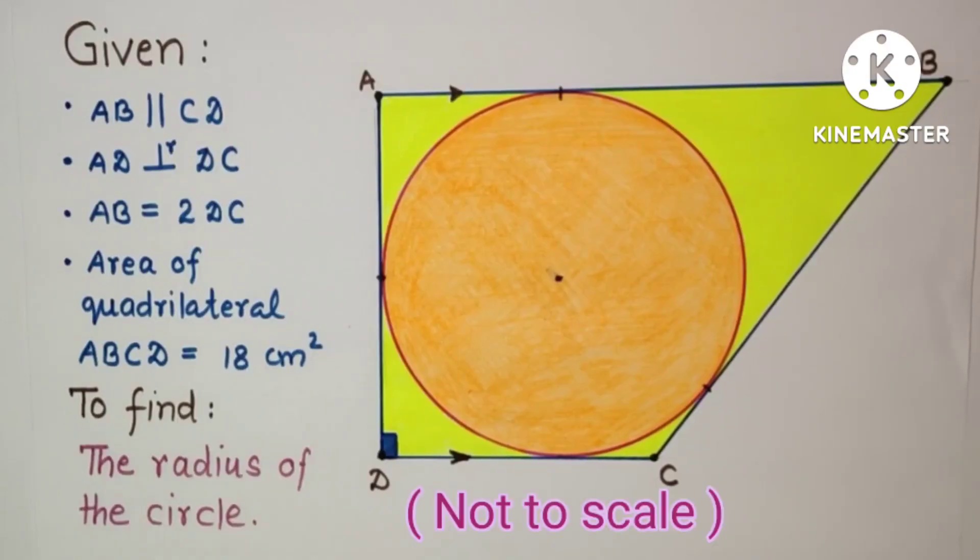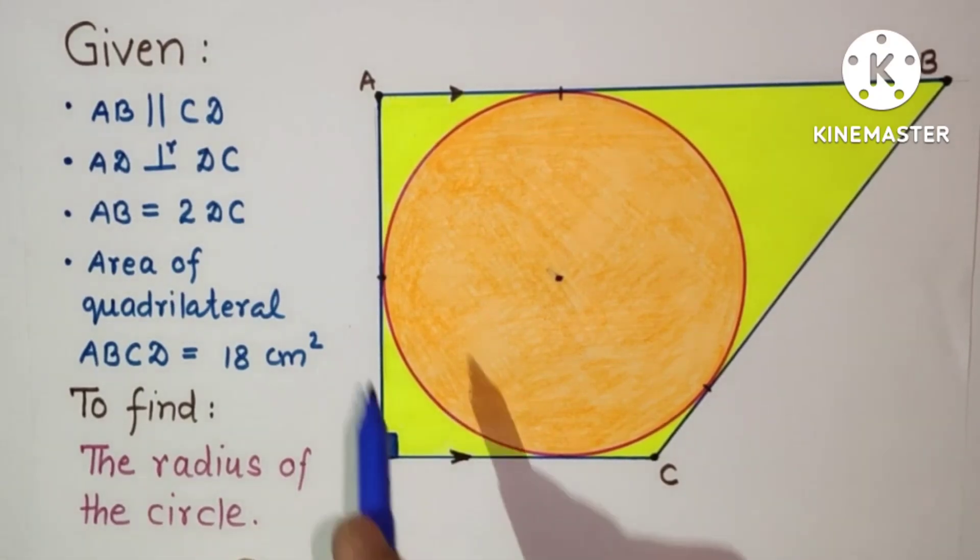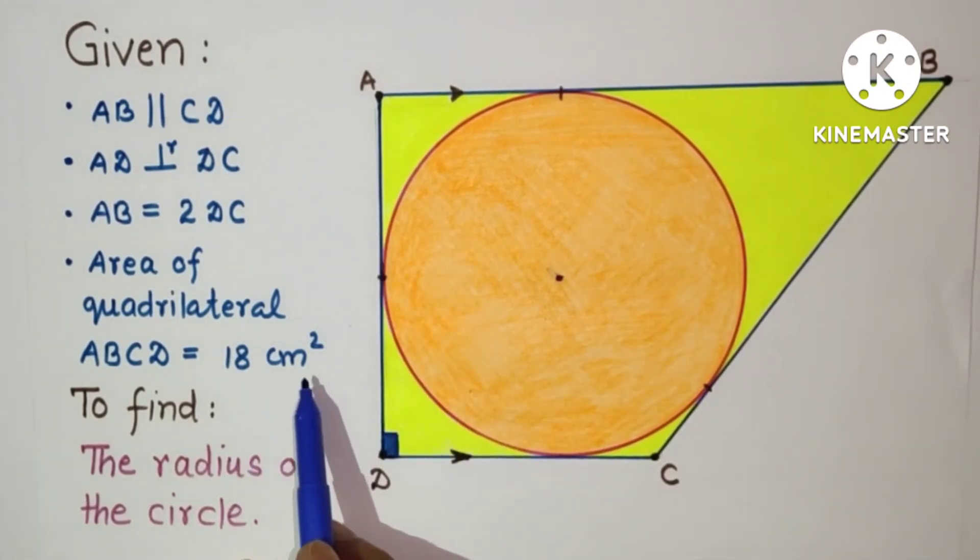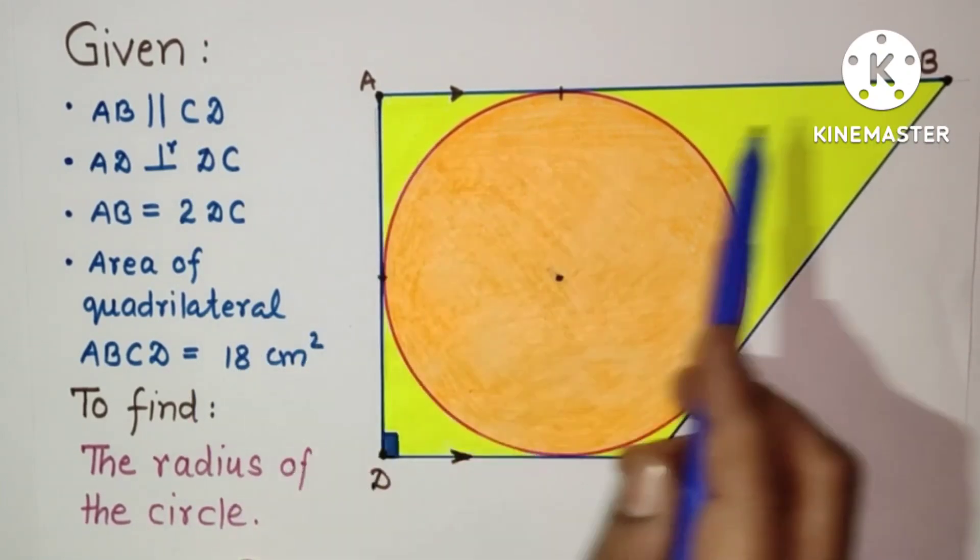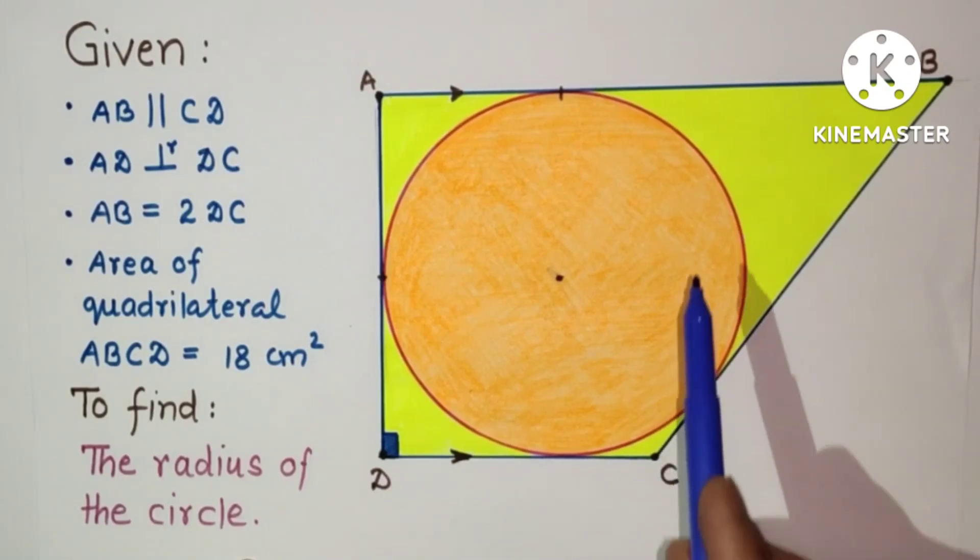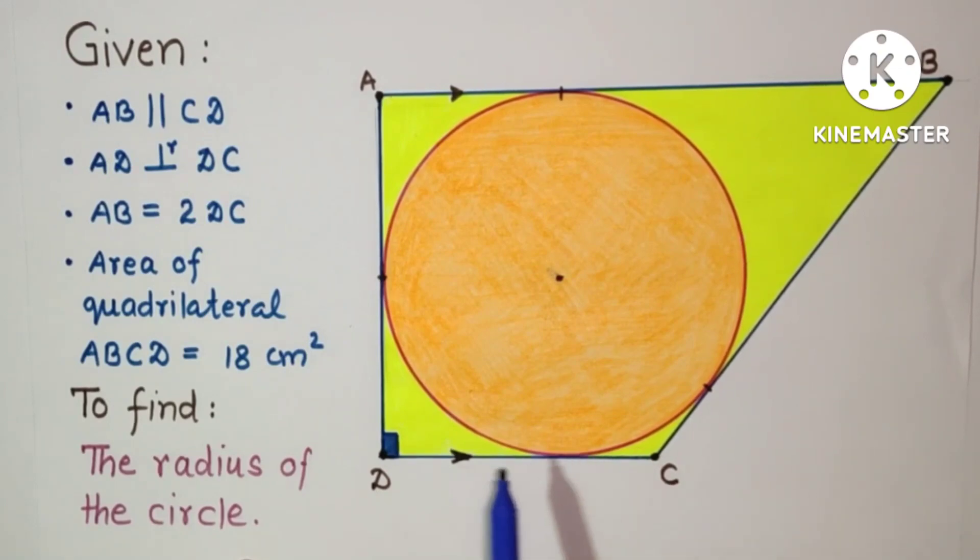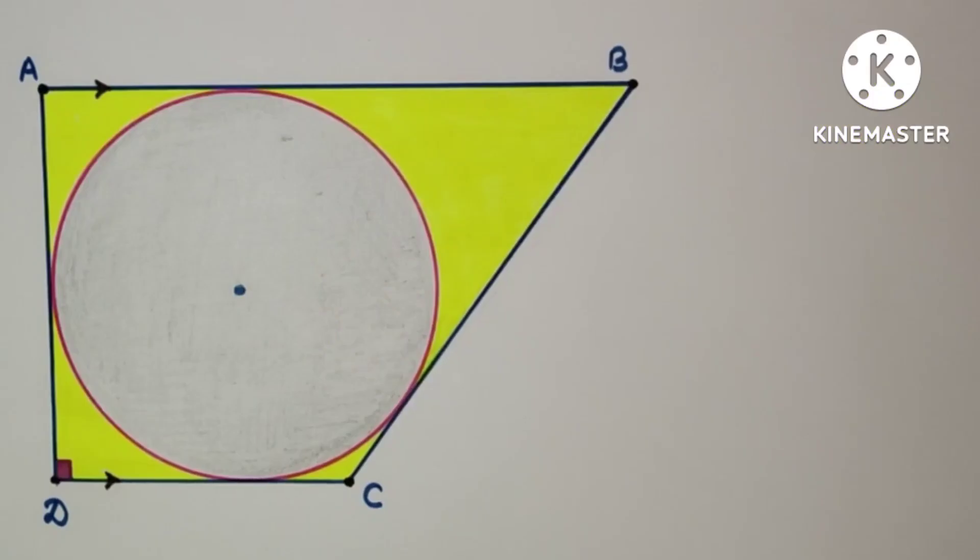Hello everyone, welcome to this channel. Today we will discuss a 10th grade question which was asked in IIT-JEE 2007. We will use circles property and Pythagorean theorem in this question. ABCD is a quadrilateral whose area is given as 18 centimeter square. AB is parallel to CD, and length of AB is twice the length of CD. This circle touches all the four sides of the quadrilateral. We have to find the radius of this circle.